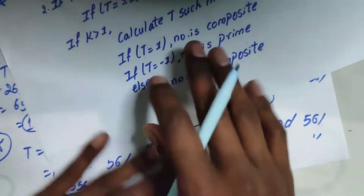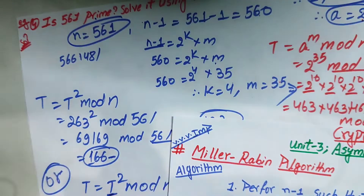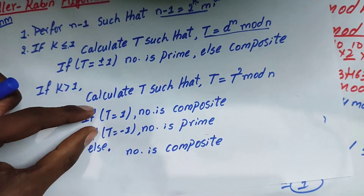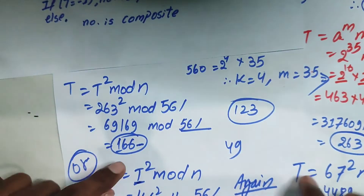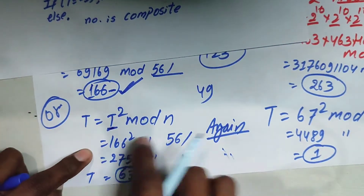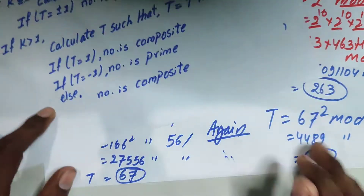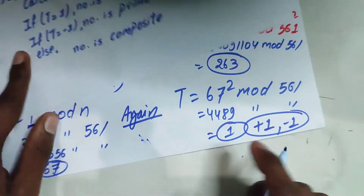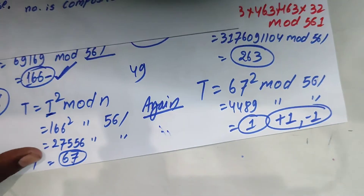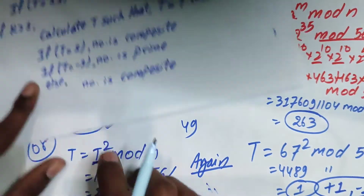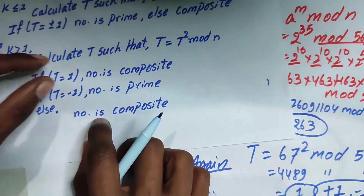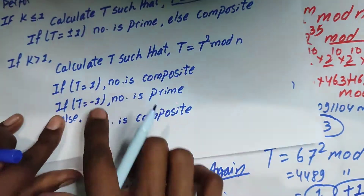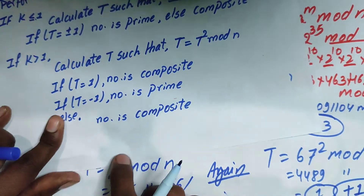So therefore 561 is composite. This is the first step — this step will confirm this result. Because if you are doing this step, you can find that this step determines the number is composite. If you do this, you determine the condition, so you choose the last step — step 7.